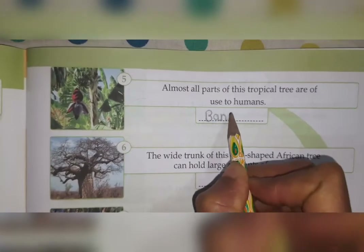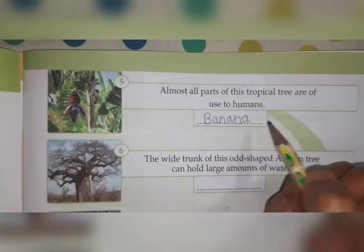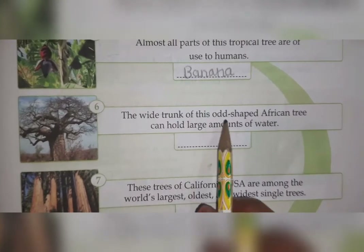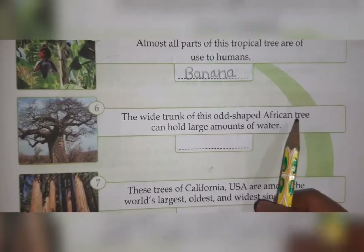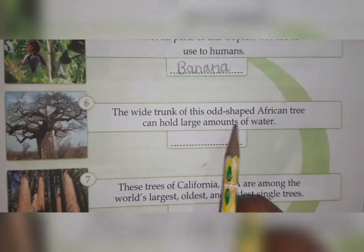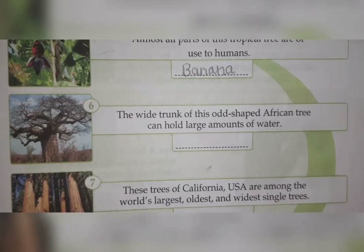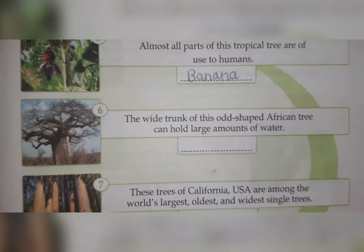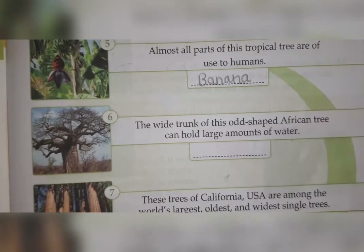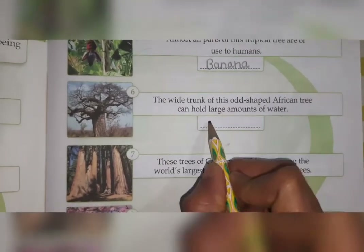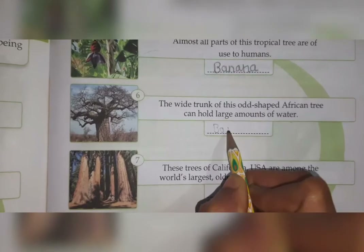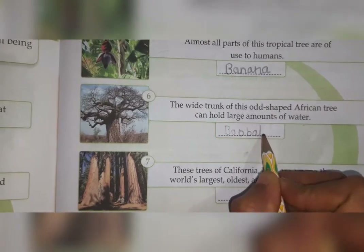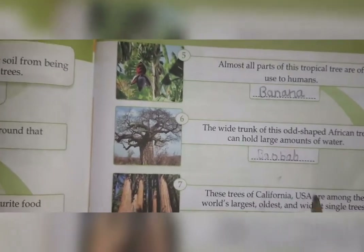Next one: 'The wide trunk of this African tree can hold large amounts of water.' This is an African tree and its name is baobab — B-A-O-B-A-B. You can see its trunk is very huge and it contains a large amount of water.